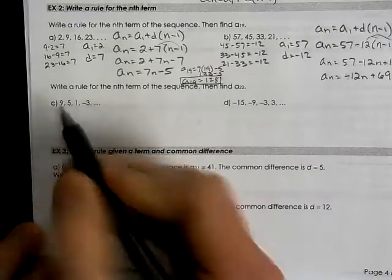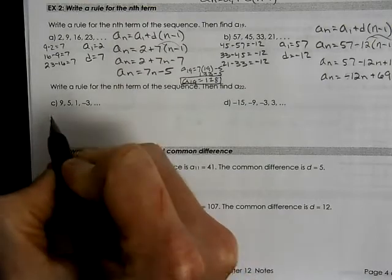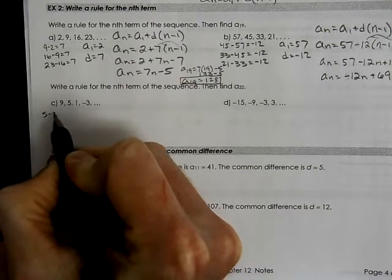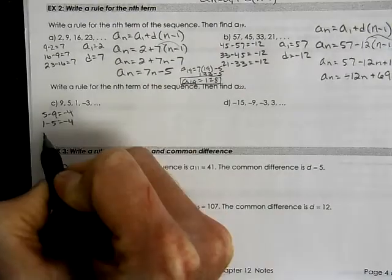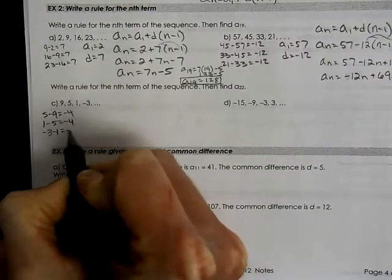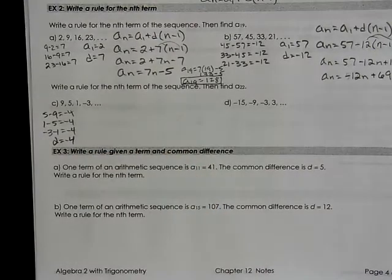So to write this rule, we're looking for a pattern. We have to decide if it's arithmetic or not. So we take our term minus the one before it. Take a term minus the one before it. And we see that we get this common difference every time of negative 4.